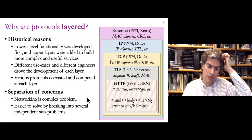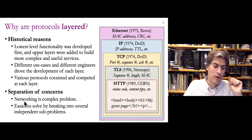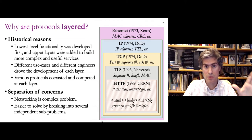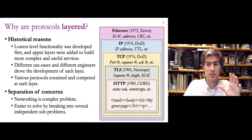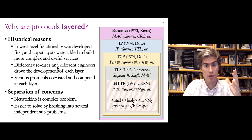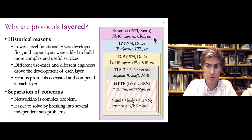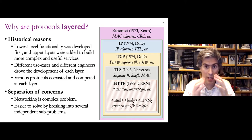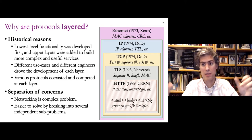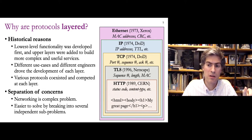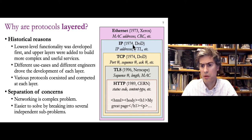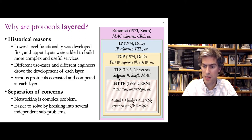Separation of concerns is one reason protocols are layered, but not the only reason. Another big part is historical: the lowest-level protocols were developed first, and new protocols were developed whenever new functionality was needed that wasn't already provided by previous layers. You can see this in the development years — roughly 1973, 1974, 1996, and 1989. The only reordering is that TLS was developed after HTTP; otherwise the stack developed roughly bottom-up.